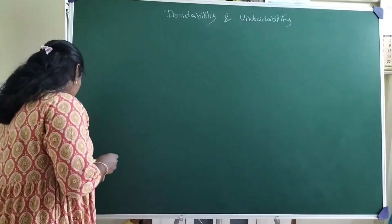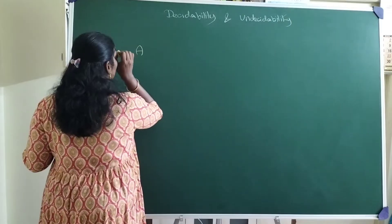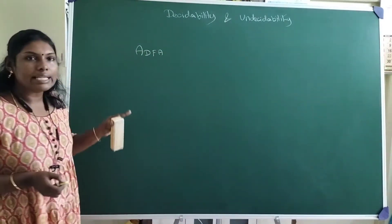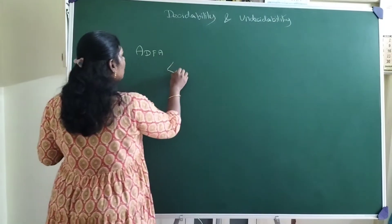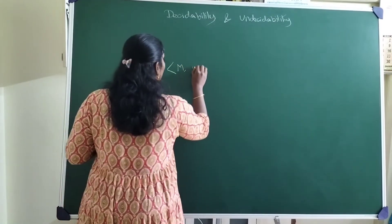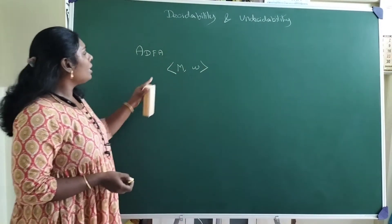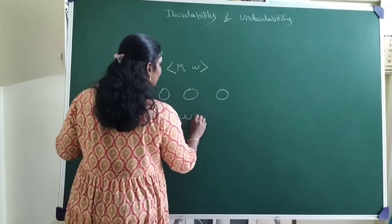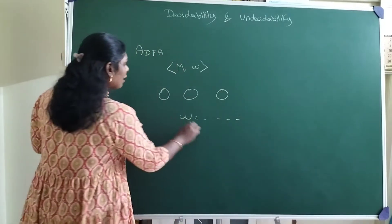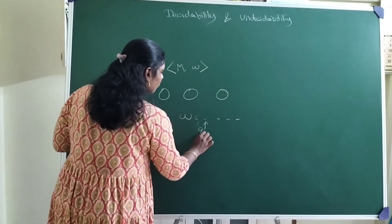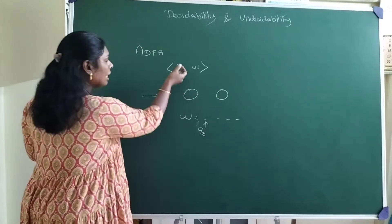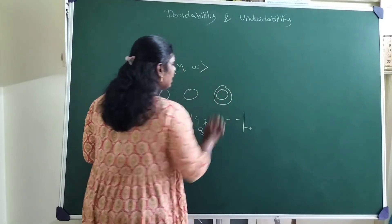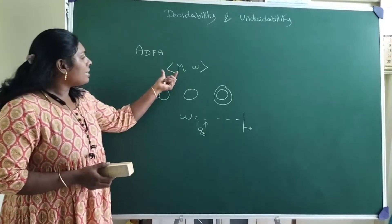Coming to the point of automata theory, we can take examples like acceptance of a DFA — a deterministic finite automaton. When an input is accepted by a DFA, we have the machine along with the input. A DFA has a set of transitions, states, and the input has some elements. We start from the starting state with the first element, taking one input at a time, and at the end of the input if the transition is in a final state, the input is accepted.